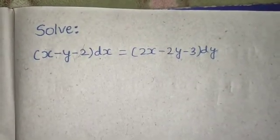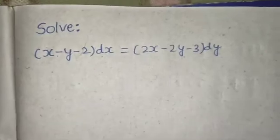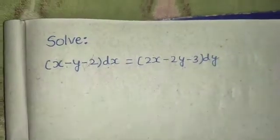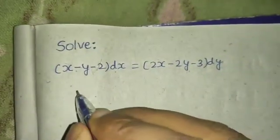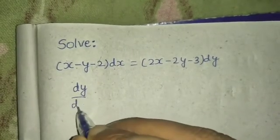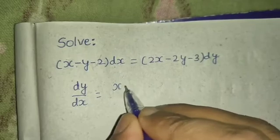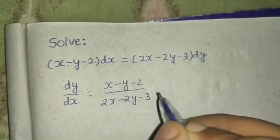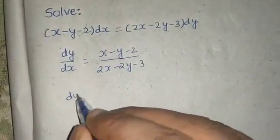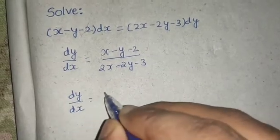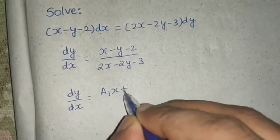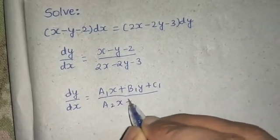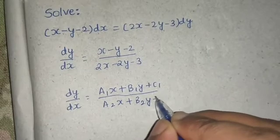Hello everyone, let's solve one question from differential equations. We have to solve this, so if we write this in the form of dy/dx, we bring this term to LHS and dx to RHS. So dy/dx equals x minus y minus 2 divided by 2x minus 2y minus 3. Now if you compare this, it is of the form dy/dx equals a1x plus b1y plus c1 divided by a2x plus b2y plus c2.